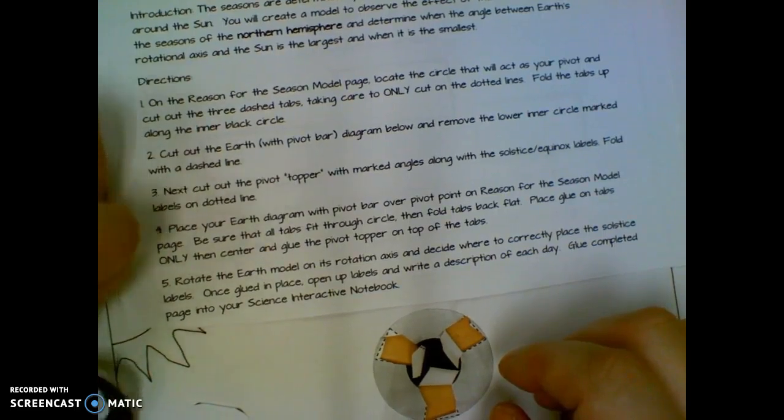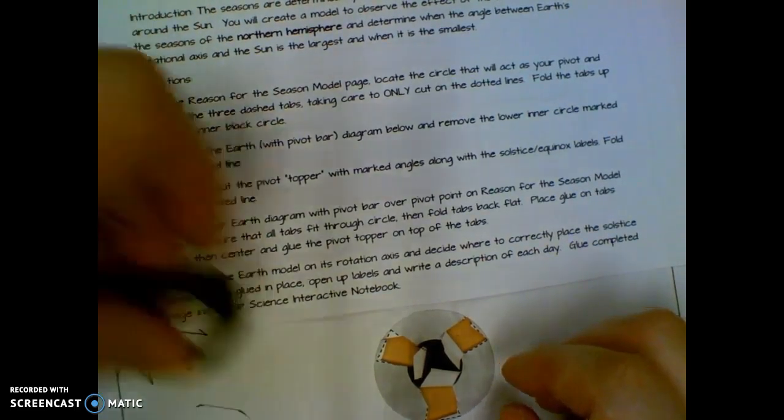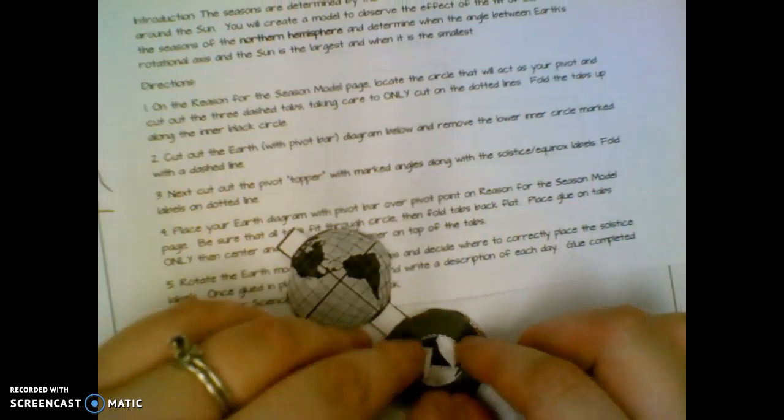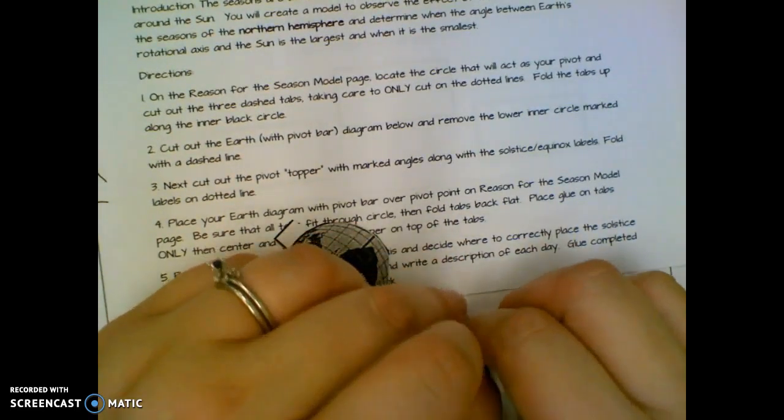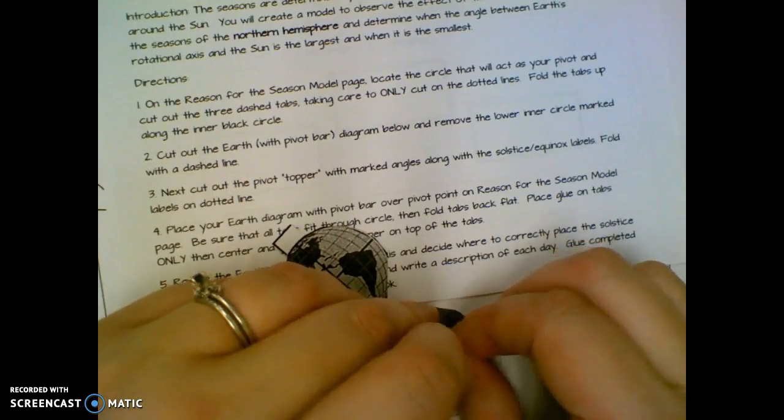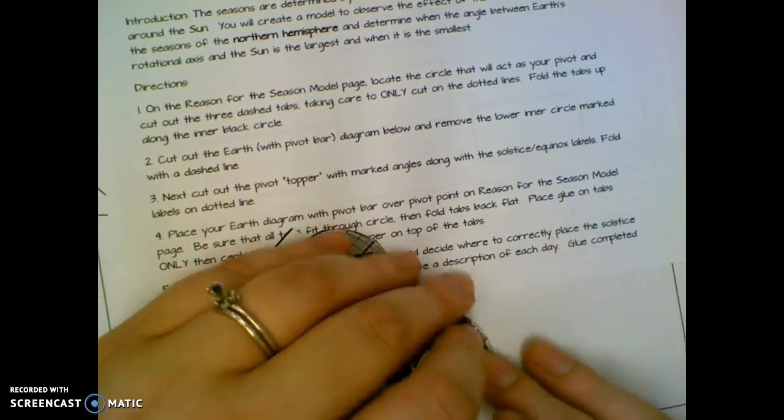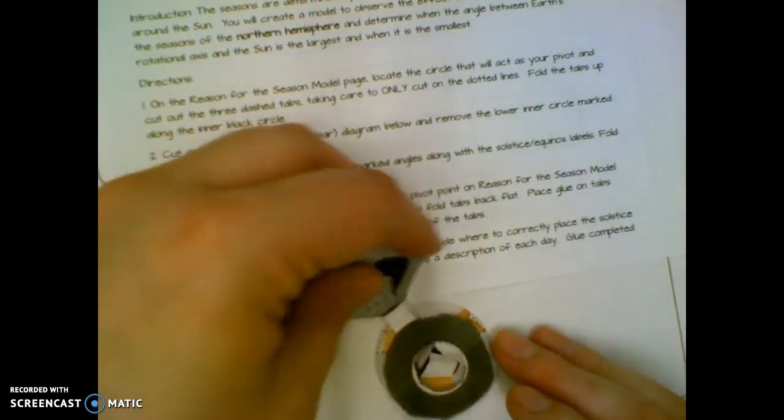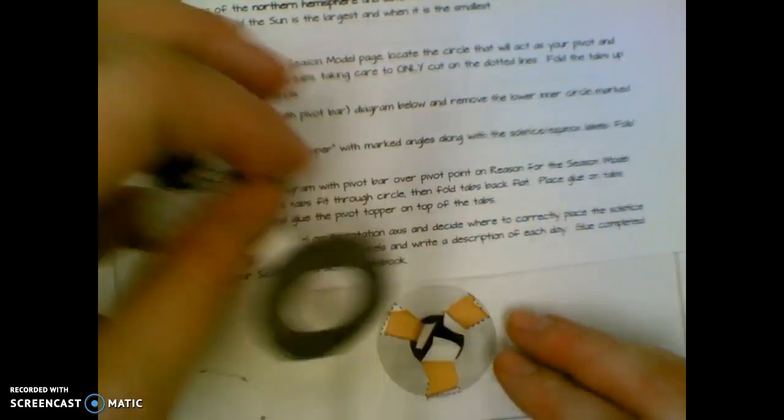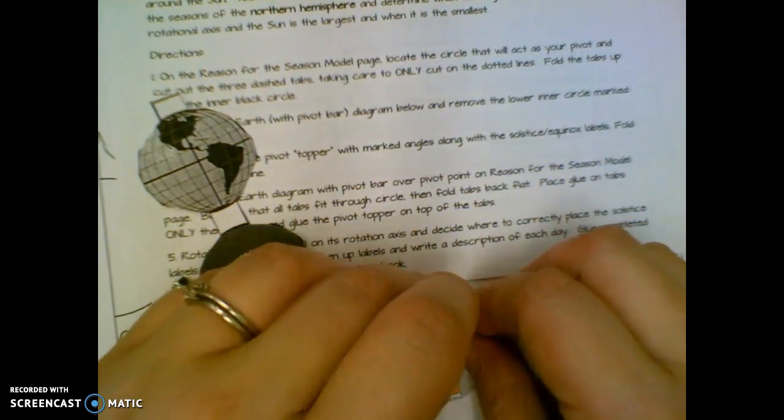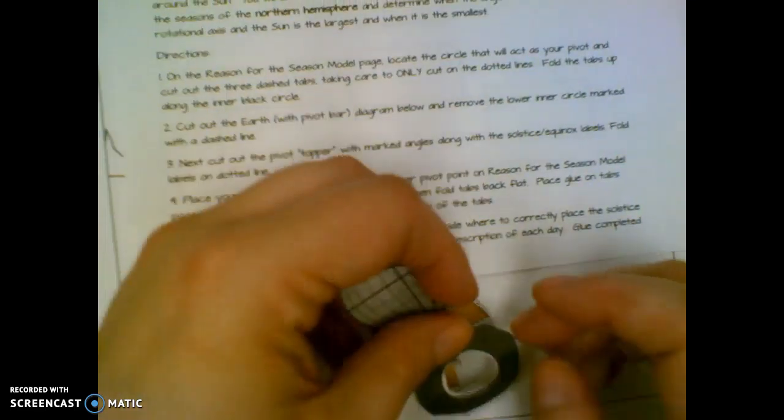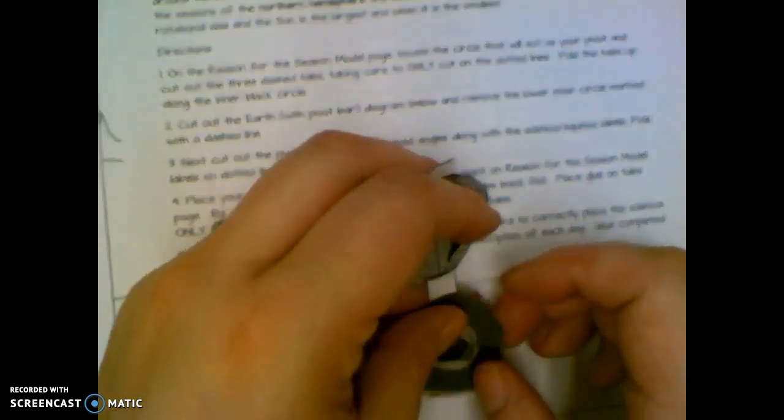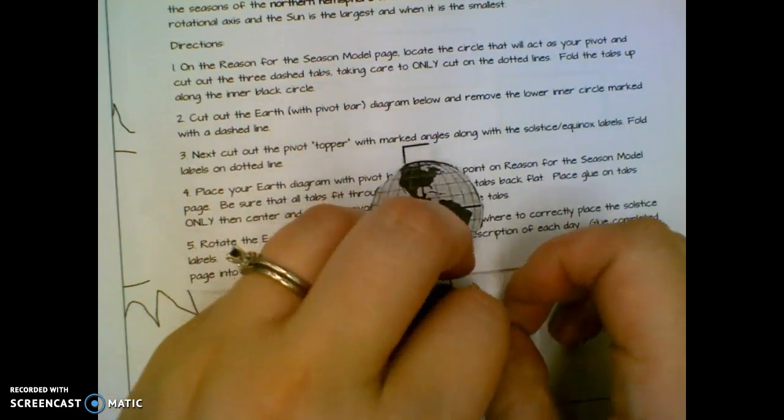...is put this diagram here so that the tabs fit through the circle completely. And if your tabs aren't cut in far enough, you can just kind of tear them in a little bit. You want to make sure that you've got room for this to rotate around the tabs. So if you have to fiddle a little bit to get the tabs a little smaller, that is totally fine. So you just place this over the tabs.